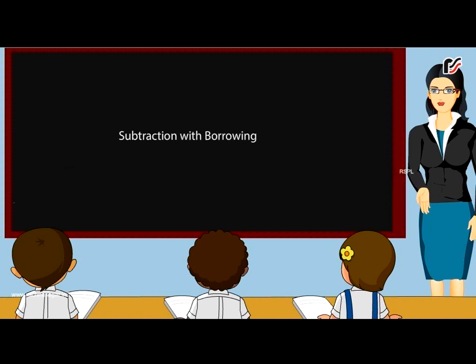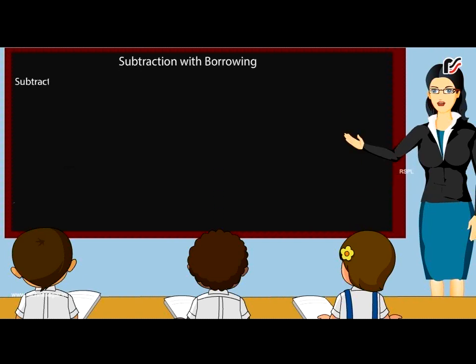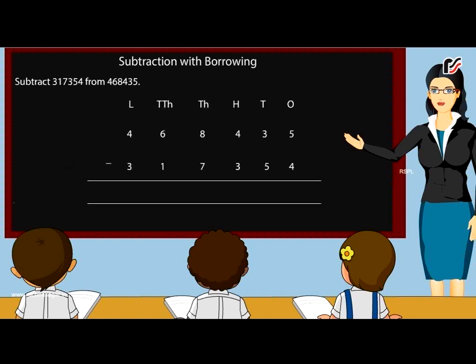Subtraction with borrowing. Subtract 317,354 from 468,435. Write the numbers in their respective columns. Beginning with the ones, we go on subtracting column-wise. Subtract the ones: 5 minus 4 equals 1. Write 1 under the ones column. Next,